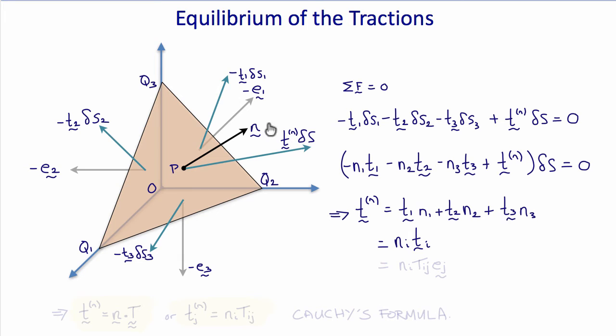Where T1, T2, and T3 are the tractions on these faces, n1, n2, and n3 are the components of the unit normal n. In other words, the traction vector T equals n i T i.